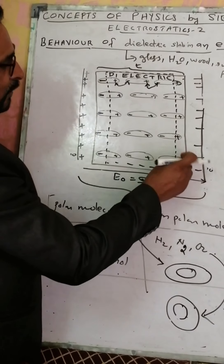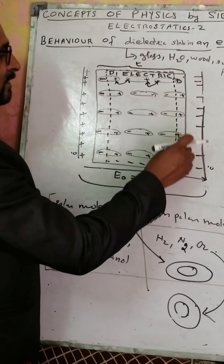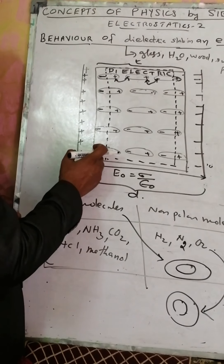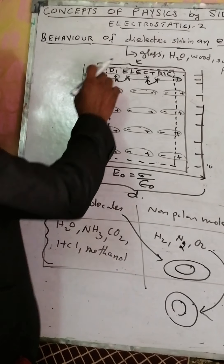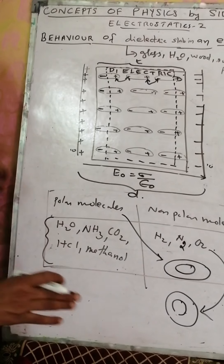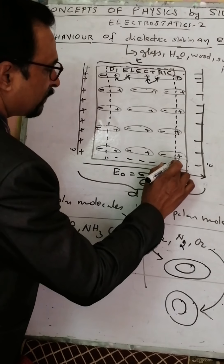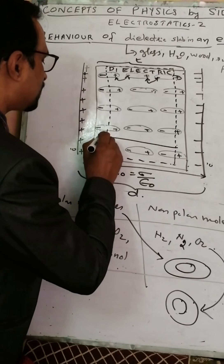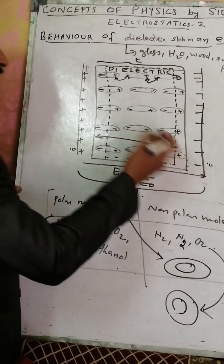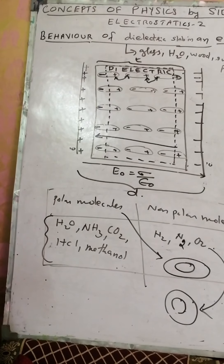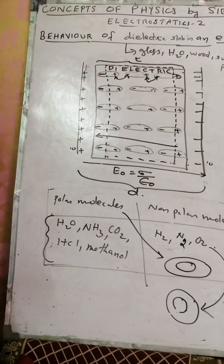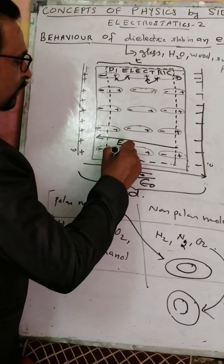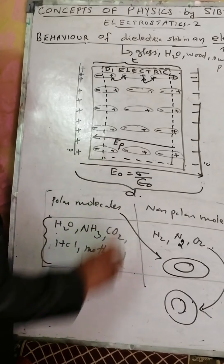On the right surface of the slab there is a net positive charge of 5, and on the left side surface there is a net negative charge of 5. From this positive charge to the negative charge, an electric field develops in the opposite direction due to polarization. This electric field is called the electric field due to polarization, E_P.